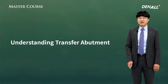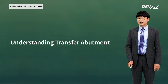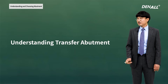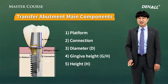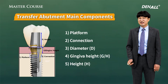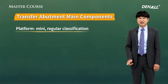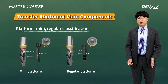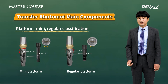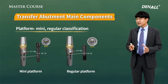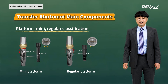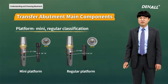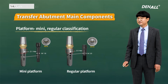Let's have a look at the All-Steam stock abutment, the transfer abutment. The transfer abutment is the most widely used one among the stock abutments. There are five main components in the stock abutment. First, let's look at the platforms. For fixtures with a diameter of 3.5 or less, a mini-platform abutment can be used. Abutment platforms can be selected depending on the fixture diameter. Regular platform abutments are used for fixtures with a diameter of 4.0 or above.